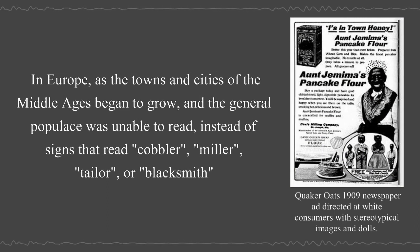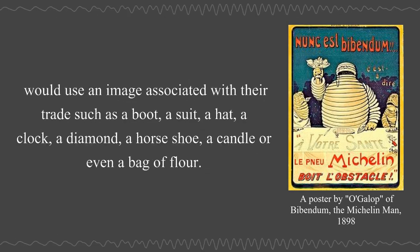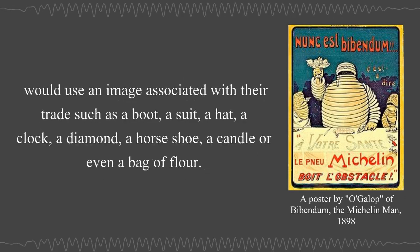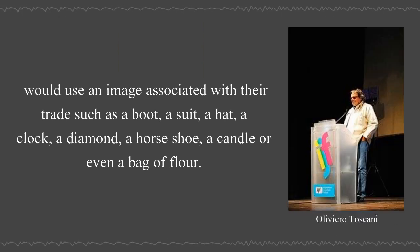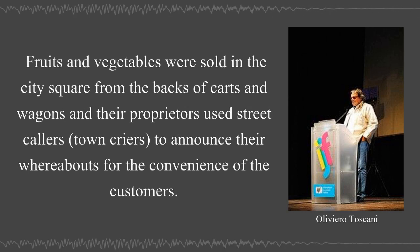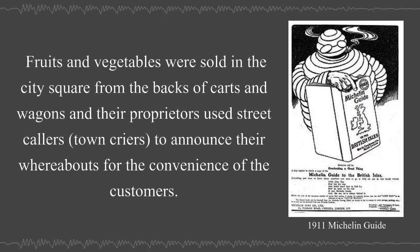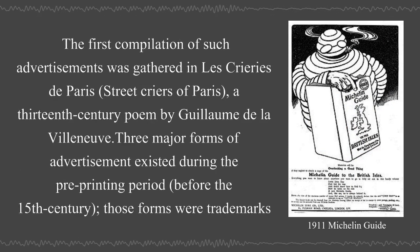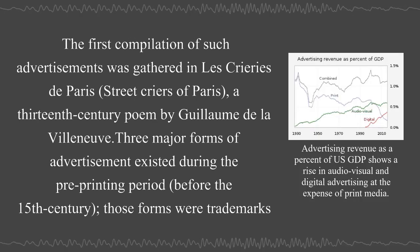In Europe, as the towns and cities of the Middle Ages began to grow, and the general populace was unable to read, instead of signs that read cobbler, miller, tailor, or blacksmith, they would use an image associated with their trade, such as a boot, a suit, a hat, a clock, a diamond, a horseshoe, a candle, or even a bag of flour. Fruits and vegetables were sold in the city square from the backs of carts and wagons, and their proprietors used street callers and town criers to announce their whereabouts for the convenience of customers. The first compilation of such advertisements was gathered in Les Crières de Paris, Street Criers of Paris, a 13th century poem by Guillemin de la Ville Neuve.